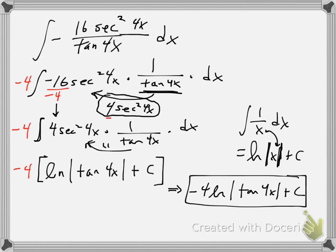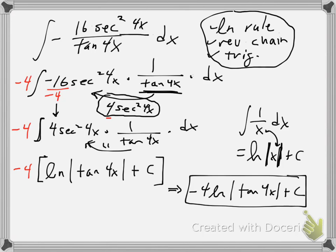This one involves the logarithmic rule, so I'm calling it the ln rule, if you like to think of it that way, to organize your thoughts. We had to use that, of course we had to use the reverse chain rule. And we had to use knowledge about trig derivatives. So all that was involved here. Actually, just trig derivatives, not trig anti-derivatives. Okay, let's look at another example.